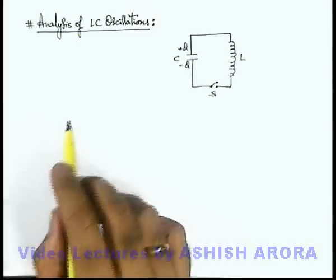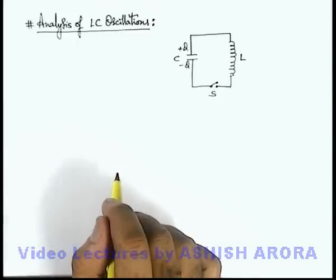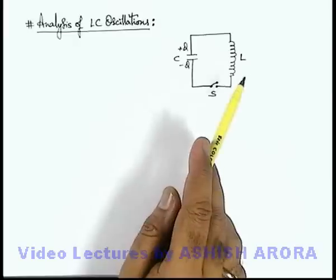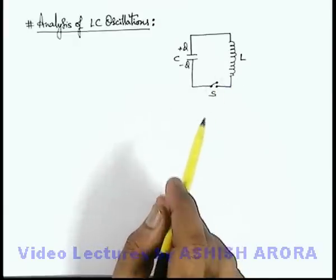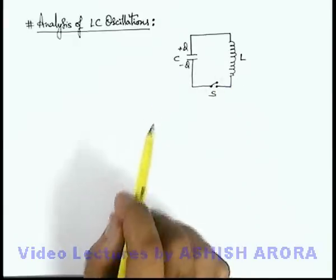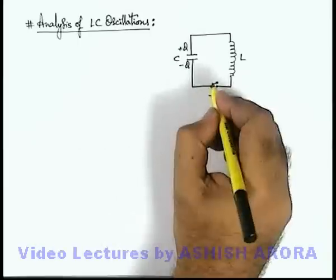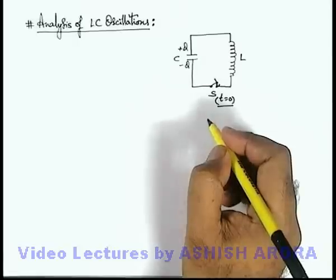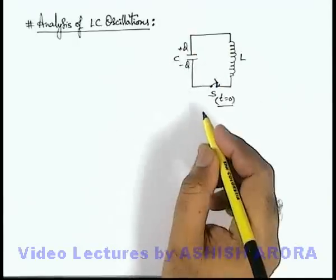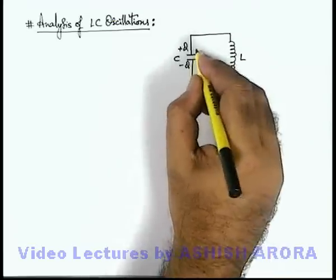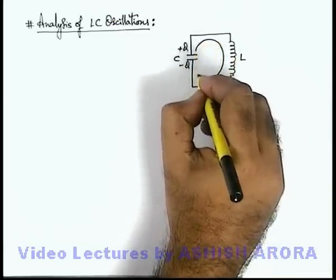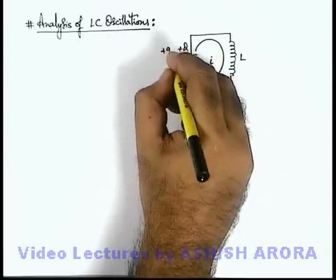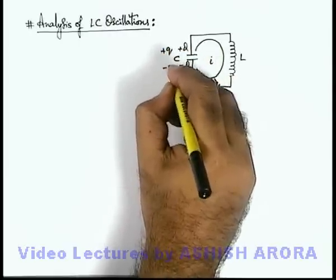Now let's analyze LC oscillations mathematically. Consider a circuit in which a capacitor and inductor are connected via a switch, and the capacitor is initially charged. If we close the switch at t equal to zero, we already qualitatively know that the charge starts oscillating in the circuit. Once it starts discharging, a current i flows, and after time t the charge on the capacitor will be plus q and minus q.